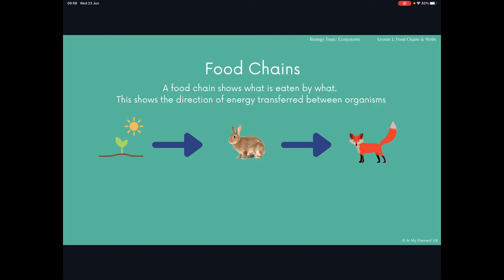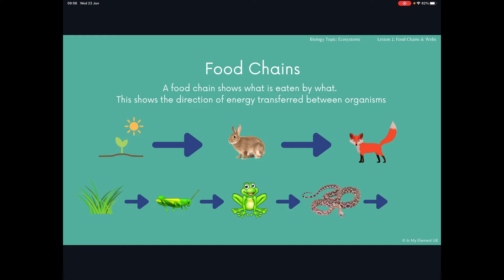Another example we've got here is grass, which is eaten by a grasshopper, which is eaten by a frog. The frog is eaten by a python or a snake, and then the snake can be eaten by an eagle. Again, the energy is transferred from one organism to another. So the eagle ends up with a large amount of energy because it has been built up through the other organisms where they fed on one another.